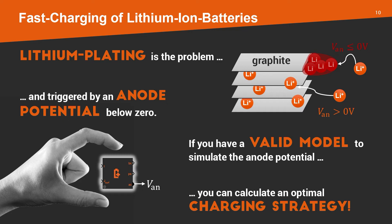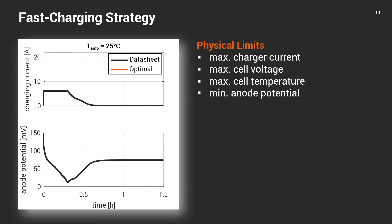So how does that look like? On the slide, you see a standard charge as indicated in the data sheet of the cell manufacturer. You see that the current is constant at the beginning until the upper voltage limit is reached and then the current decays. In the plot below, you see the anode surface potential and it is way above zero millivolts. So in this charge, lithium plating would not occur.